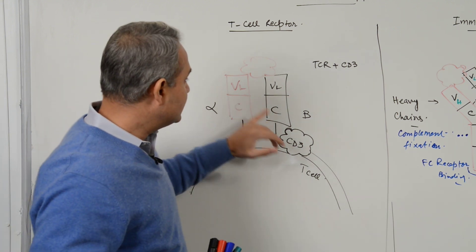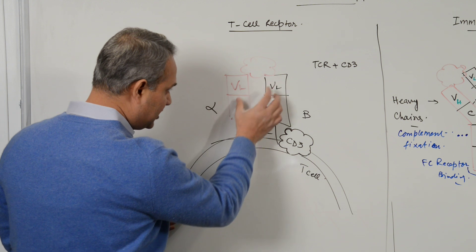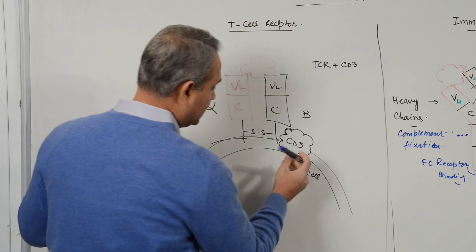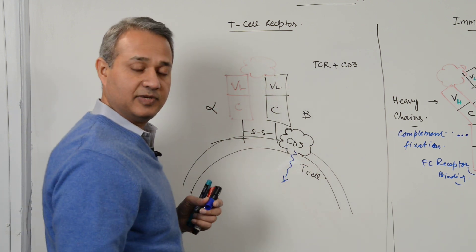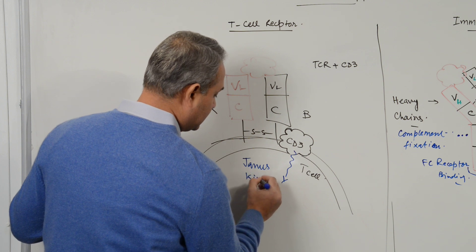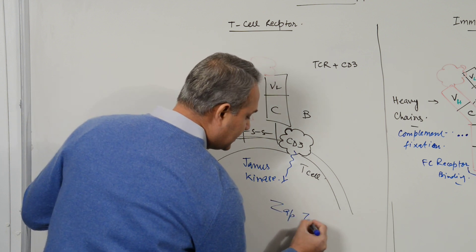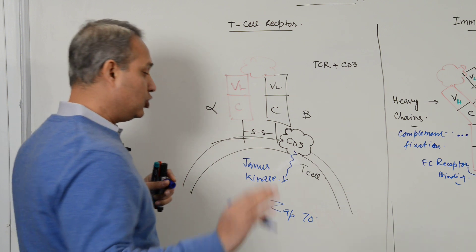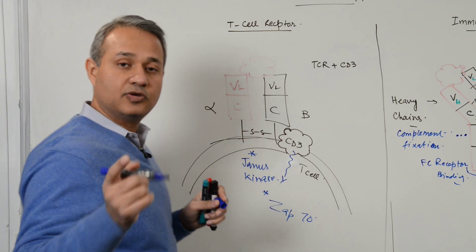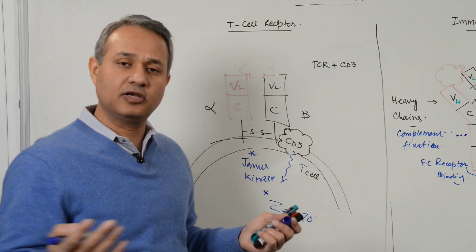T cell receptor needs CD3 for signal transduction. Once an antigen-antibody interaction occurs, the conformational change in the T cell receptor causes a change in CD3, which then transduces the signal into the cytoplasm. CD3 works with Janus kinase and ZAP70 for signal transduction, and defective ZAP70 or defective Janus kinase also causes SCID.